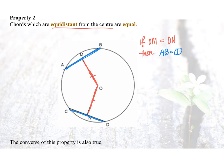The converse of this property is also true. Meaning, if AB is equal to CD, then OM must be equal to ON.